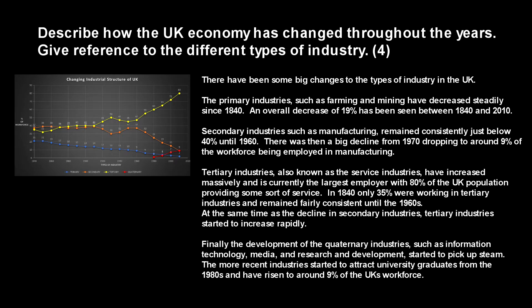Here is my model answer for this question. There have been some big changes to the types of industry in the UK. The primary industries such as farming and mining have decreased steadily since 1840, with an overall decrease of 19% seen between 1840 and 2010.